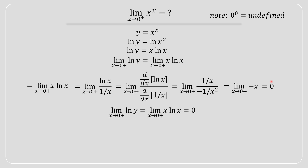At this point we've established that the limit as x approaches 0 from the positive side of ln(y) is equal to the limit of x·ln(x), which equals 0. But we're not solving for the limit of ln(y) — we're solving for the limit of y itself, i.e. x to the power of x.